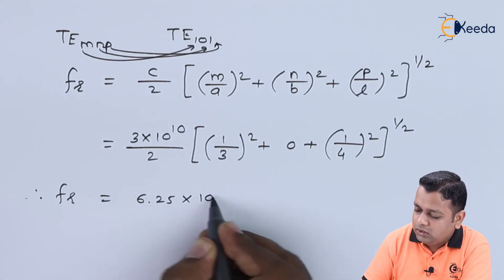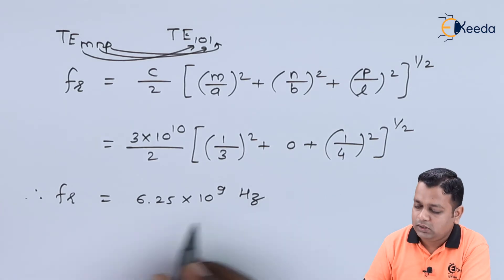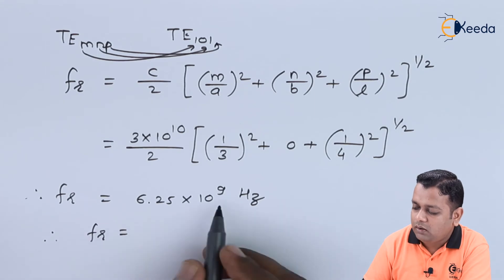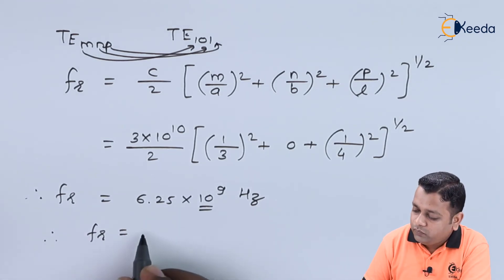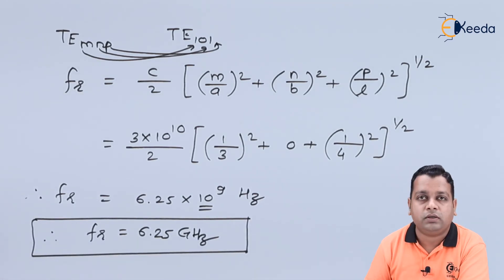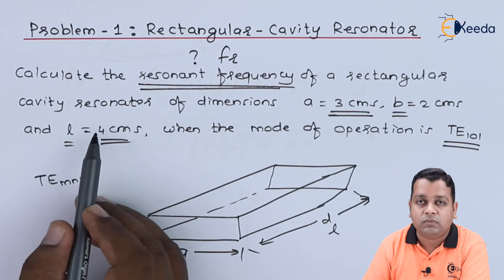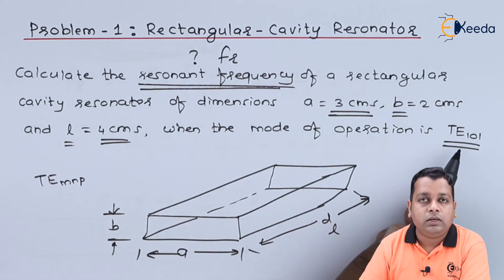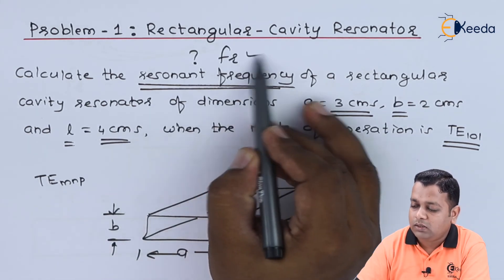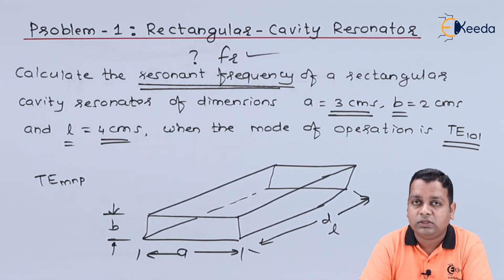Computing this gives a resonant frequency of 6.25 × 10⁹ Hz, which is 6.25 GHz. This is the required answer. By the next lecture we will solve another problem on rectangular cavity resonators. I hope you enjoy learning microwave engineering — subscribe to the Ekida channel. Thank you.